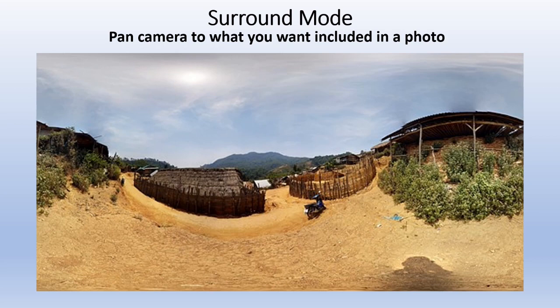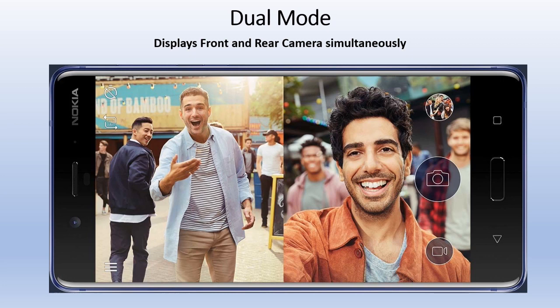Dual Mode shows both the front and rear cameras at the same time. The picture on the right shows the person taking the photo — that's the front-facing camera — and the picture on the left is what they're pointing the back camera at. This is strictly about having the front view and rear view simultaneously. On many of these you can even resize the windows.